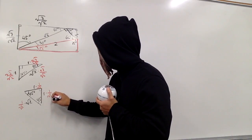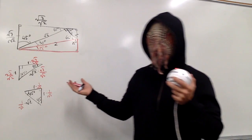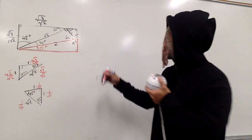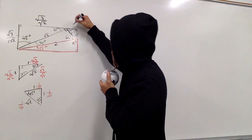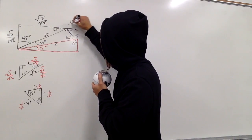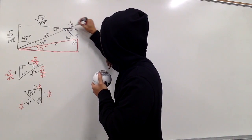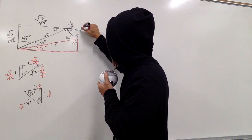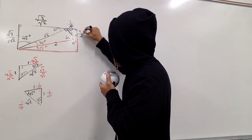I will multiply this by 1 over square root of 2, and this by 1 over square root of 2. So right here, this is 1 over square root of 2, and this right here is also 1 over square root of 2.